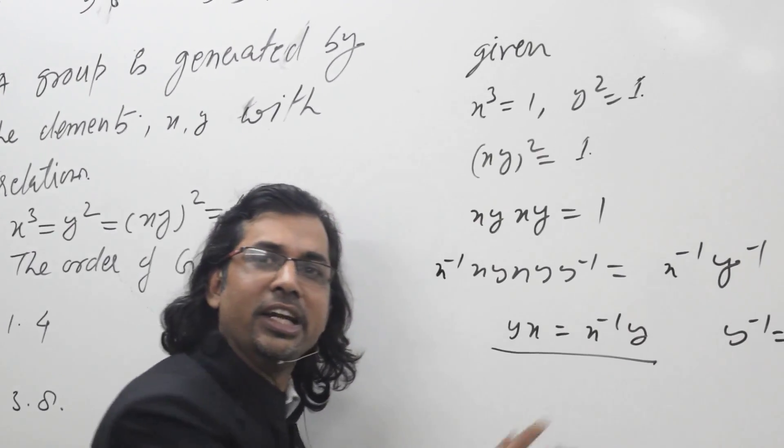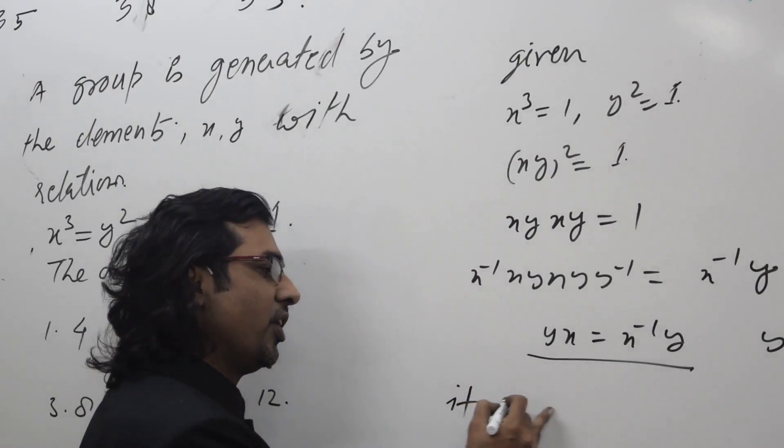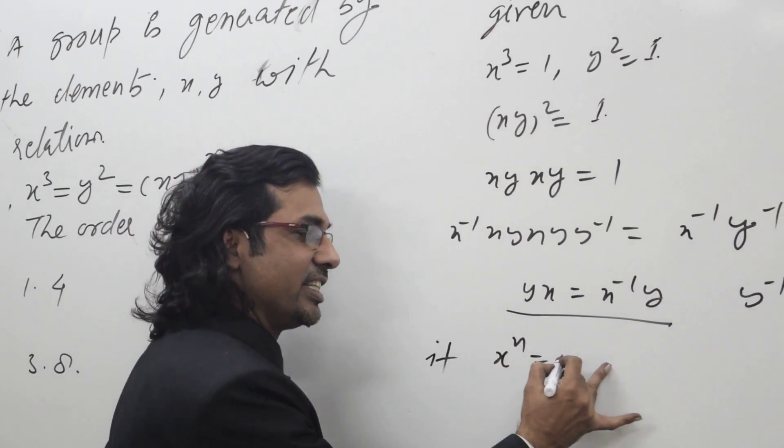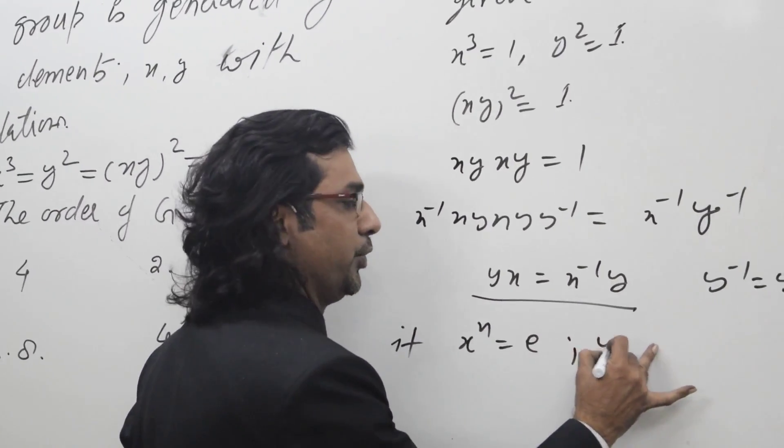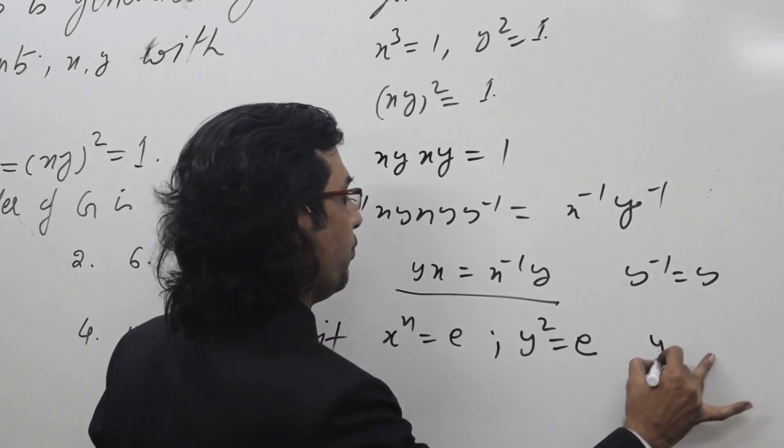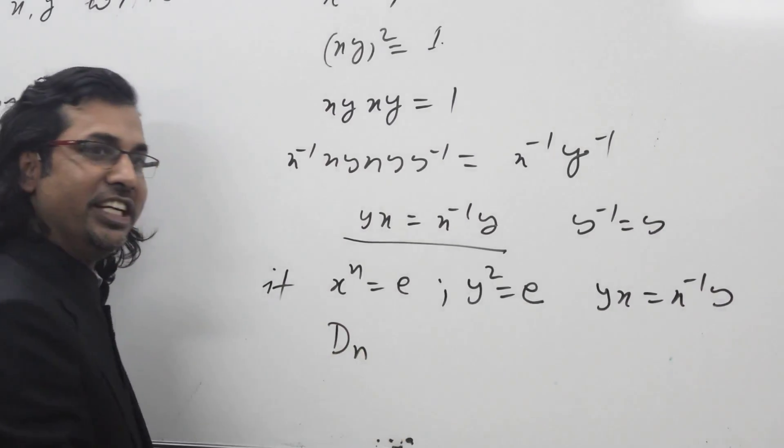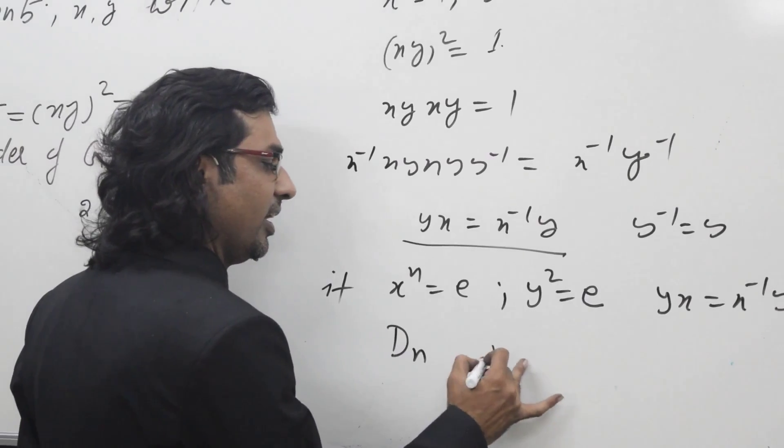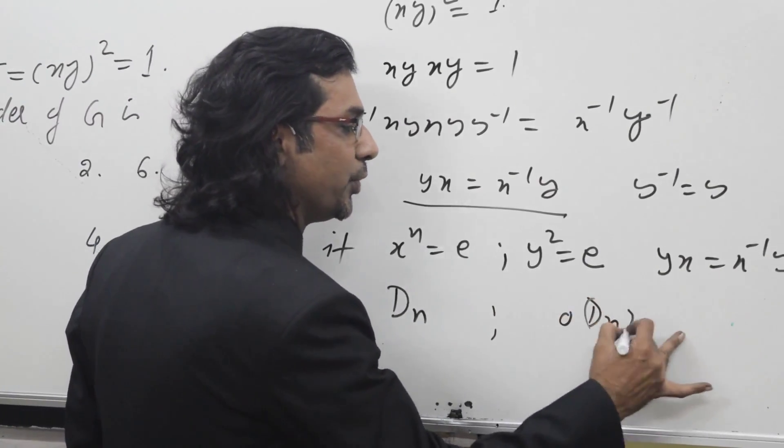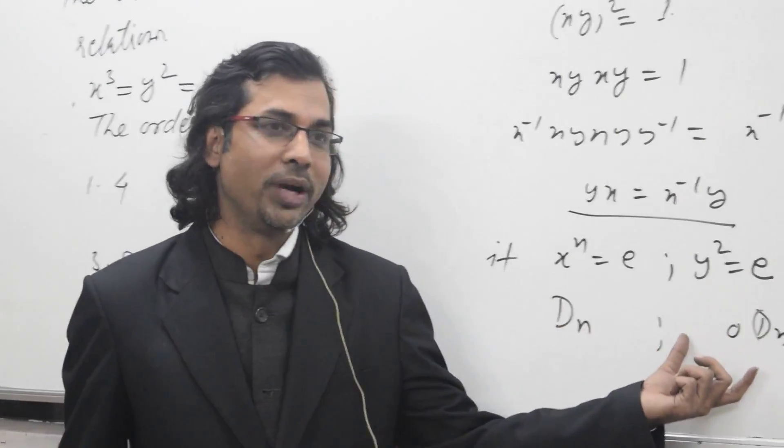This is a very fundamental relation which we have seen in dihedral groups. If x to the power n is e, y to the power 2 is e, and yx equal to x inverse y, this group is defined as dn with the element dn equal to 2n. This can easily be verified how 2n elements are obtained.